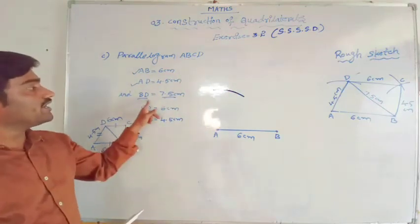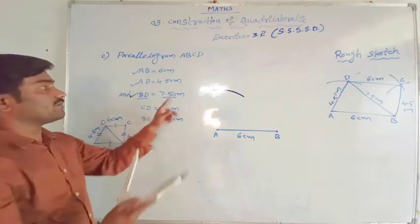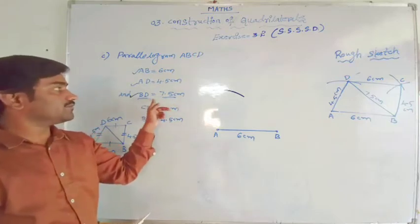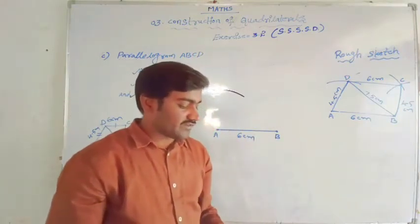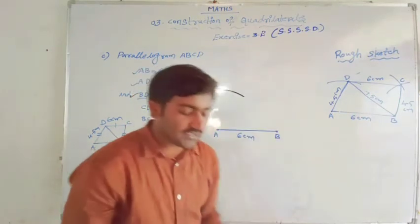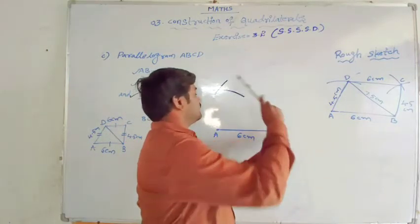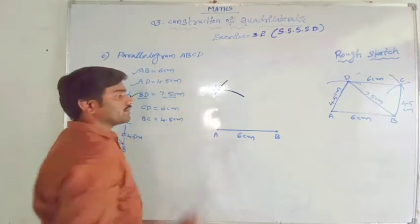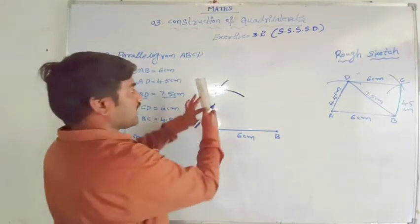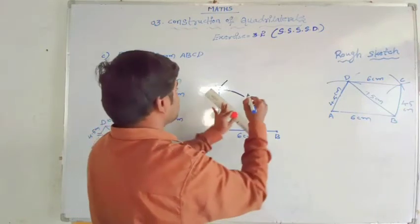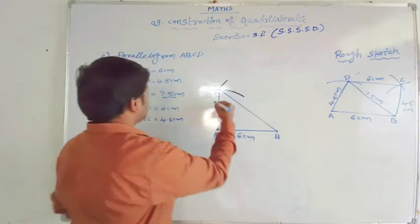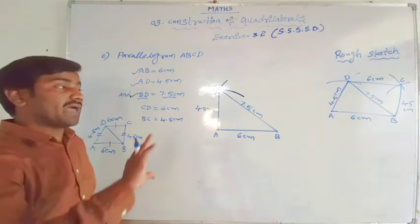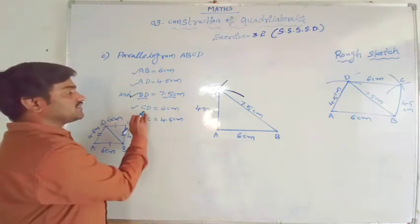Keep it aside for time being. Now BD equal to 7.5 centimetres - we have B, that is enough. Take 7.5 centimetres radius on the compass. Keep at B and draw an arc. The both arcs are intersecting at this point - that is the common point D. We got D. Join AD and BD. This is exactly 4.5 centimetres and this is 7.5 centimetres. The construction of parallelogram is not yet completed; we have the other two measurements also. Now take CD equal to 6 centimetres.